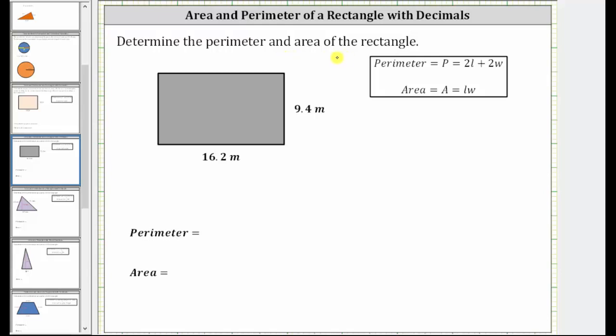We're asked to determine the perimeter and the area of the rectangle. We're looking at the rectangle, notice how the length is 16.2 meters and the width is 9.4 meters.